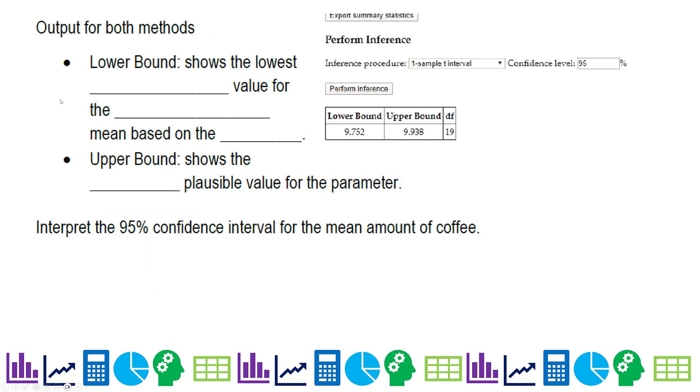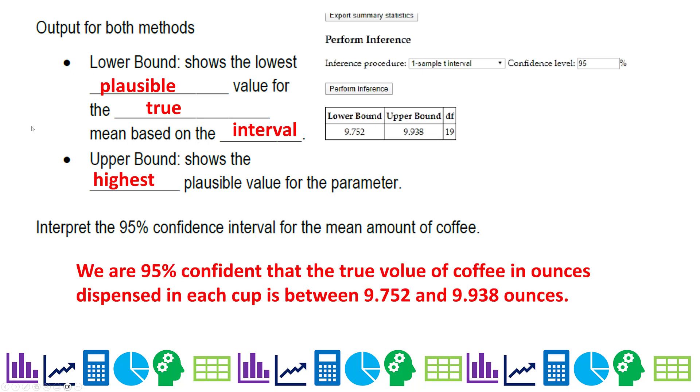So once you have the output, the lower bound shows the lowest plausible value for the true mean based on the interval. The upper bound shows the highest. So to interpret this, we basically say we're 95% confident that the true value of coffee volume in ounces dispensed in each cup is between 9.752 and 9.938 ounces. And that's it.